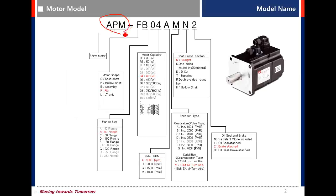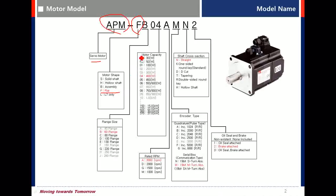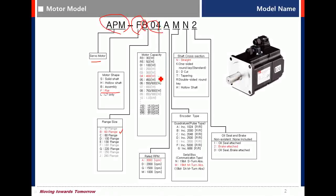APN is servo motor. F means flat type. B is frame size 60mm. 04 is 400W. M is rated RPM.